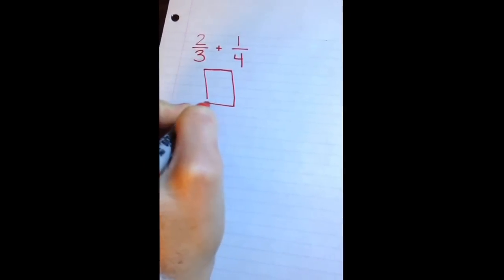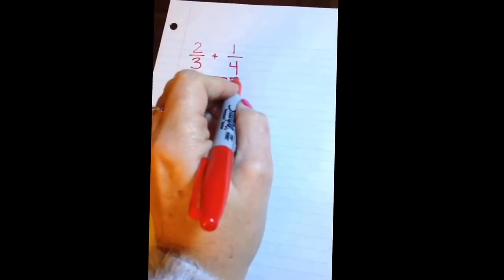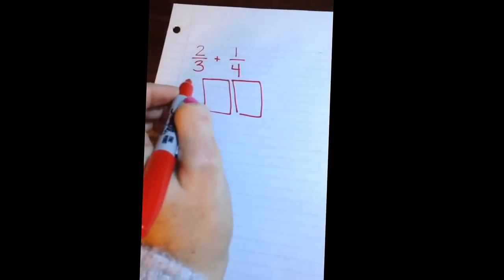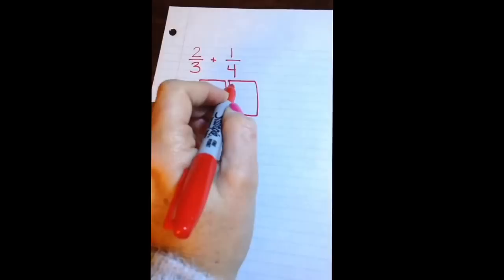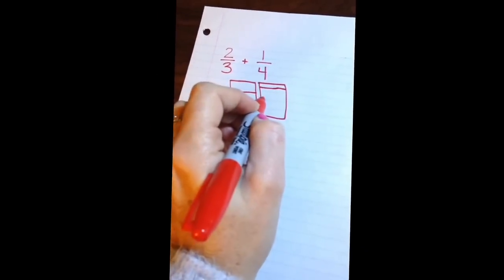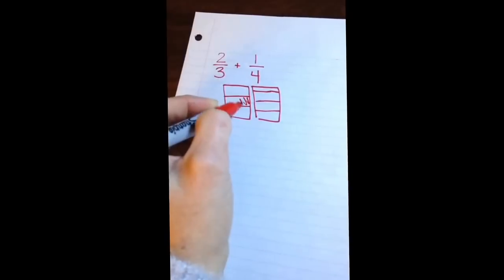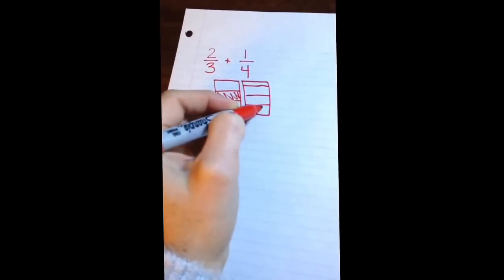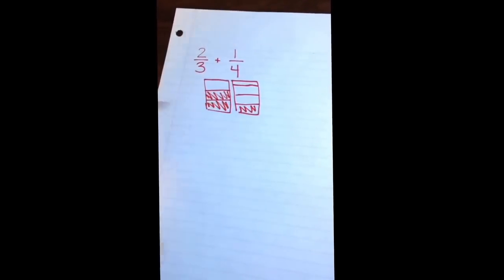And here's why fraction strips make it so much easier for us to find equivalent fractions and why we need equivalent fractions with common denominators to add. Because when you add fractions, you need to be adding same size pieces. And so I can draw this two thirds and one fourth and shade that in. But because the pieces are not equal size, you can't name that shaded area.